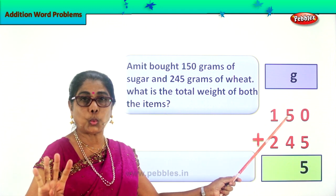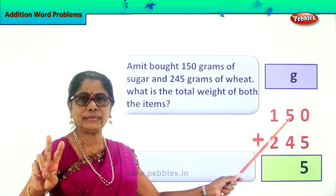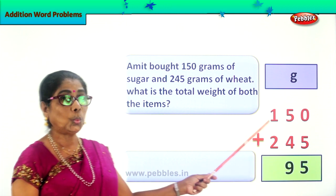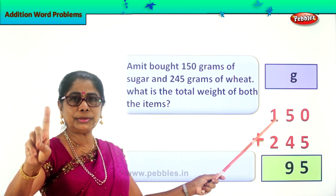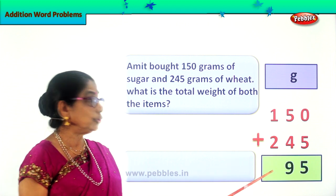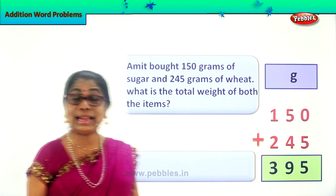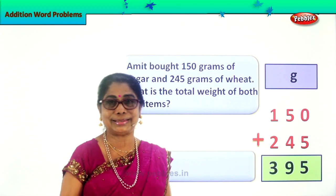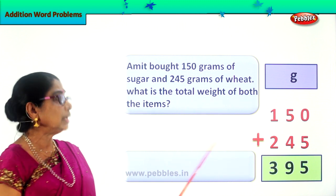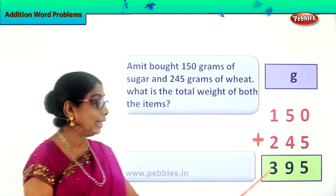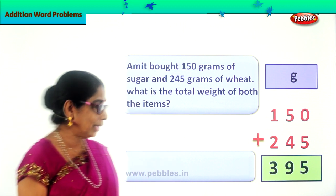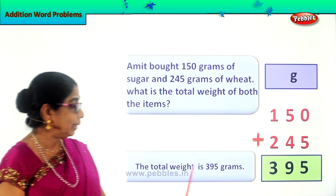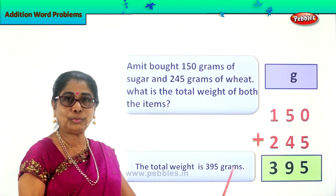Now 5 plus 4 — after 5: 6, 7, 8, 9 — 5 plus 4 is 9. We write down 9. Then 1 plus 2 — 1, 2, 3 — 1 plus 2 gives you 3. So 395 grams is the total weight of sugar and wheat. What is the total weight of both items? The total weight of both items is equal to 395 grams. The total weight of sugar and wheat is 395 grams. Both items together.